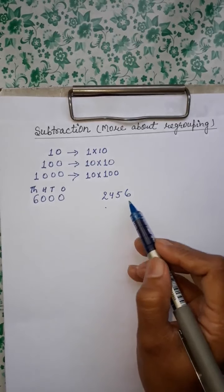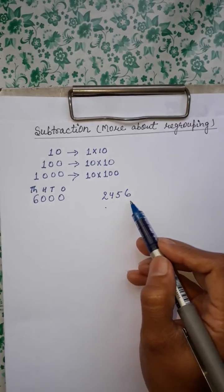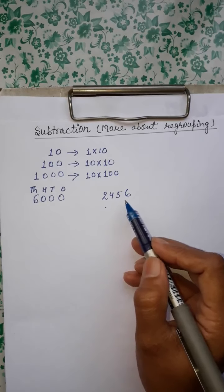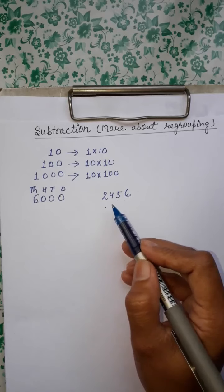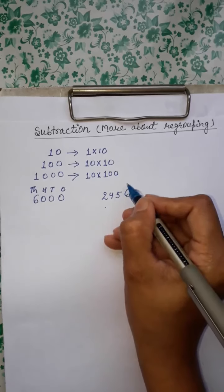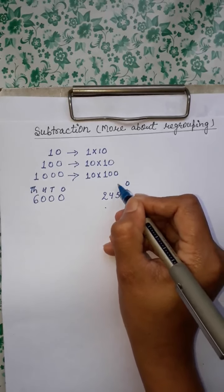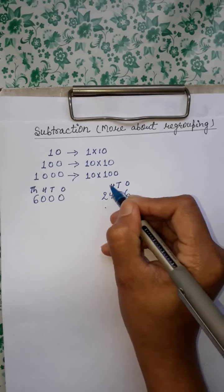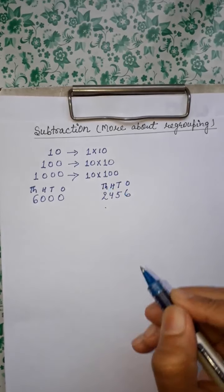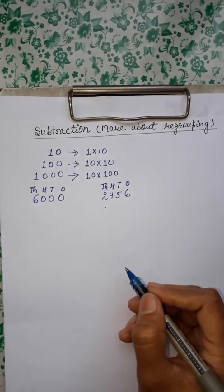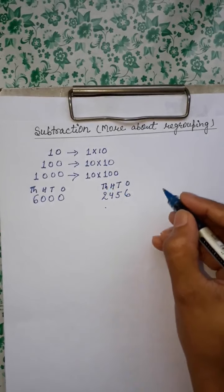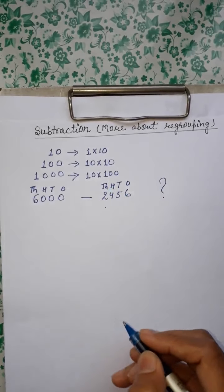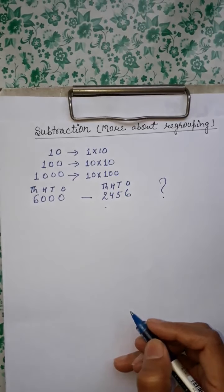And this number 2,456 says I do not have any 0 — mere paas koi bhi 0 nahi hai kisi bhi place pe: nahi 1s pe, 10s pe, 100s pe, 1000s pe. Now how we will subtract? Toh hum kaise subtract karenge ise?